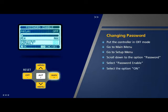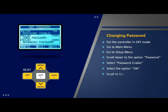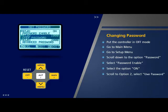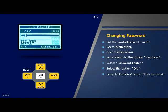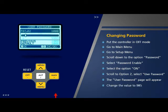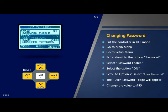Now scroll to option 2 on the password page, select 'User Password' and press OK. The user password page will appear. The default password is set as 1000. You can change it to a smaller or bigger value by scrolling. Change the value to 985 and press OK. The user password is changed to 985.